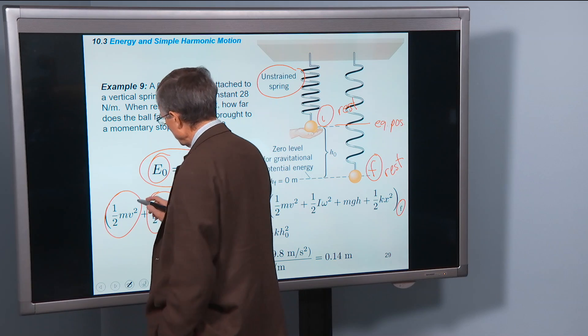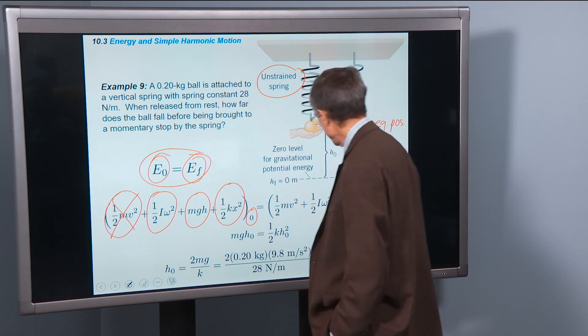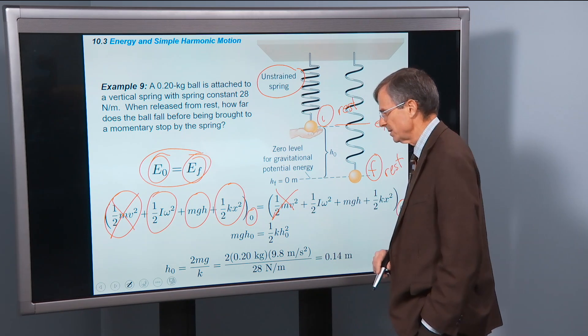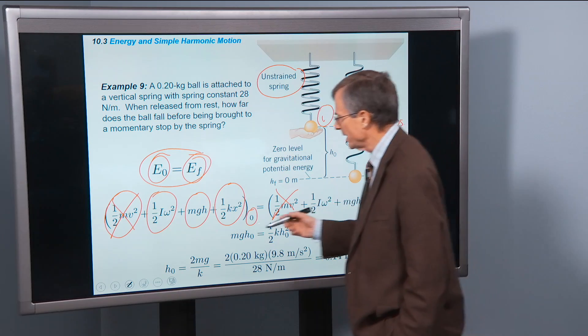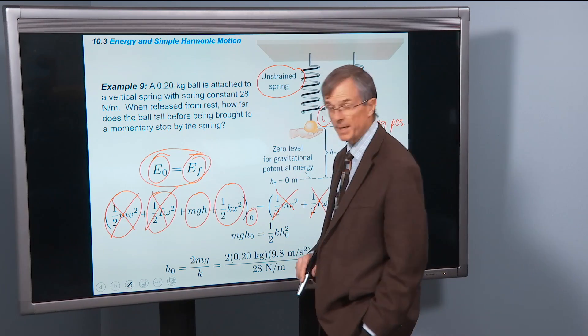So the initial velocity is zero, therefore the initial kinetic energy is zero. The final velocity is zero, therefore the final kinetic energy is zero. It's not rotating, so we don't have any rotational kinetic energy.